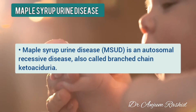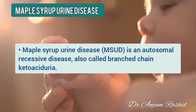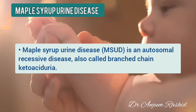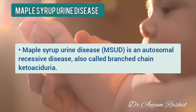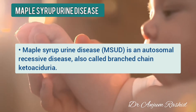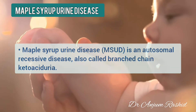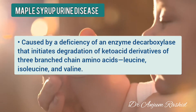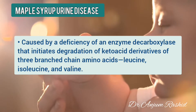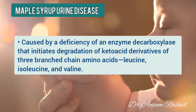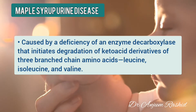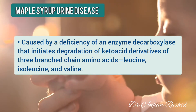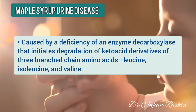Maple syrup urine disease is an autosomal recessive disorder and it is also called branch chain ketoacid urea. It is caused by deficiency of an enzyme called decarboxylase that initiates the degradation of keto acid derivatives of three branch chain amino acids.